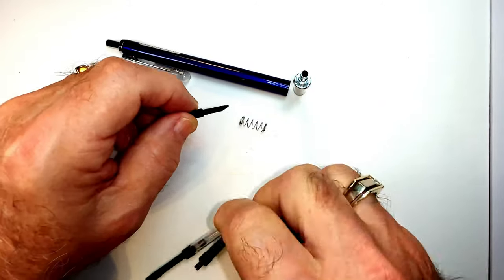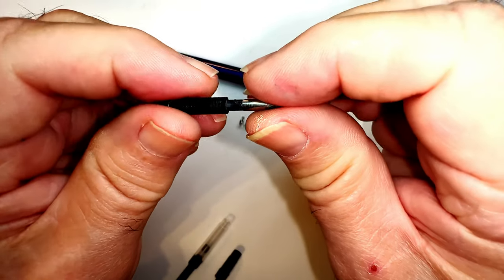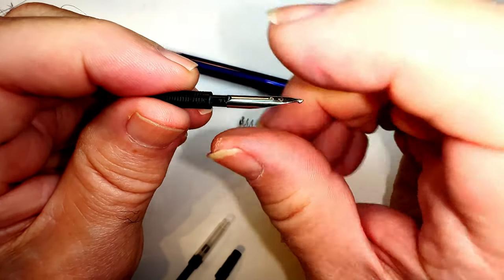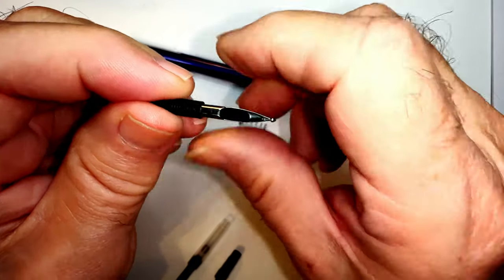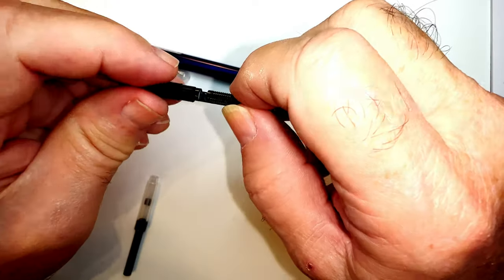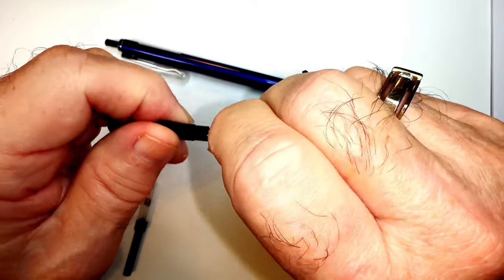But just to put that new nib on there, we just line it up - there's a little nub right there that lines up with the slot - and just slide it on. Put that back into the collar, shove it all the way in.